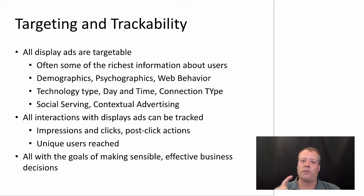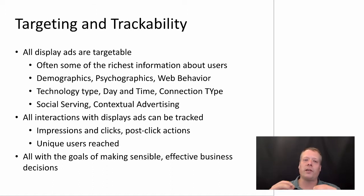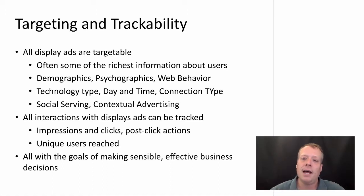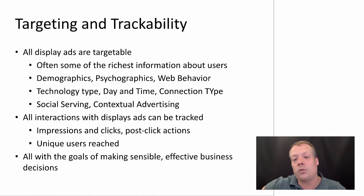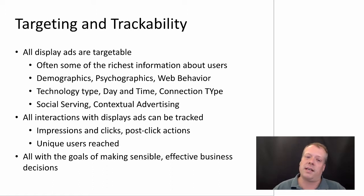As a result, sometimes you can infer things like demographics, psychographics, and web behavior. You can also look at things like what kind of technology they're using, what the day and time is, what their connection type is, whether they're on a mobile or desktop device. Depending on who's running the ad network — like if Facebook is running it — you might even have knowledge about friendship connections. And in a lot of Google cases, they know about the blog or YouTube video hosting the ad and can display contextual advertising that fits with that.